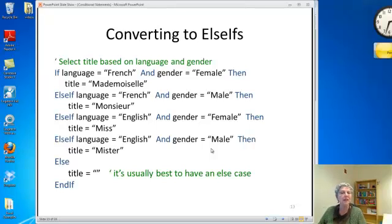Just to show you an option, here's another way to do it using else if. I restructured it using a different flow of logic to accomplish the same result. If the language equals French and the gender is female, then I'll use mademoiselle. Then if language is French and gender is male, if language is English and gender is female, if language is English and gender is male. Finally I have the optional else for no title. It's usually best to have an else case, some kind of default just in case nothing else is true.